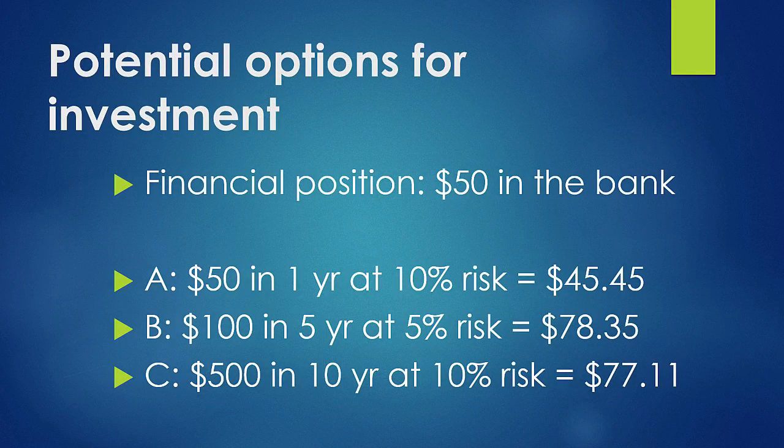Looking at these different options, I'm going to put up the results. You can see the first option — the $50 — you actually lose value. I have $50 today, and someone says they're going to give me $50 a year from now. Well, it's not actually worth $50. It's worth something less because I'm holding risk. It's actually worth $45.45. So I'm actually losing money out of that deal even though I'm receiving $50 in the future. So I don't want option one.